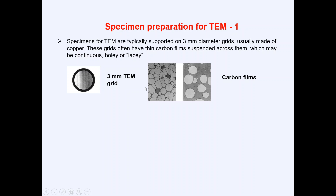In this first technique, the specimen for TEM is typically supported on a 3-millimeter diameter copper grid, which you can see here. These grids often have a thin carbon film suspended across them, which may be continuous, holey, or lacy — as you can see here — and that film is used to support the sample.